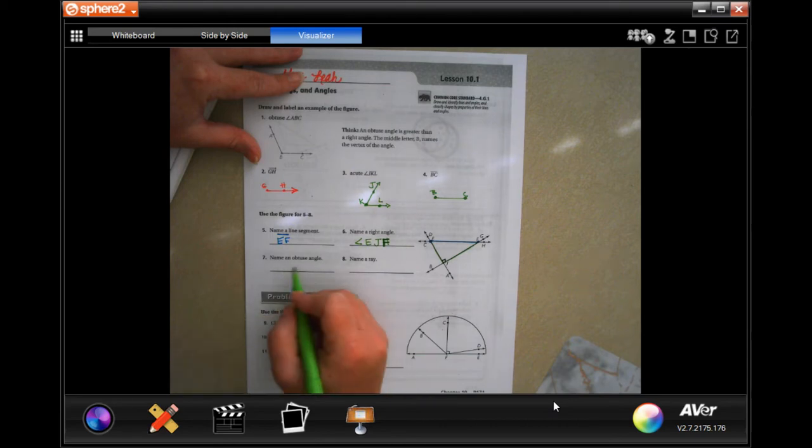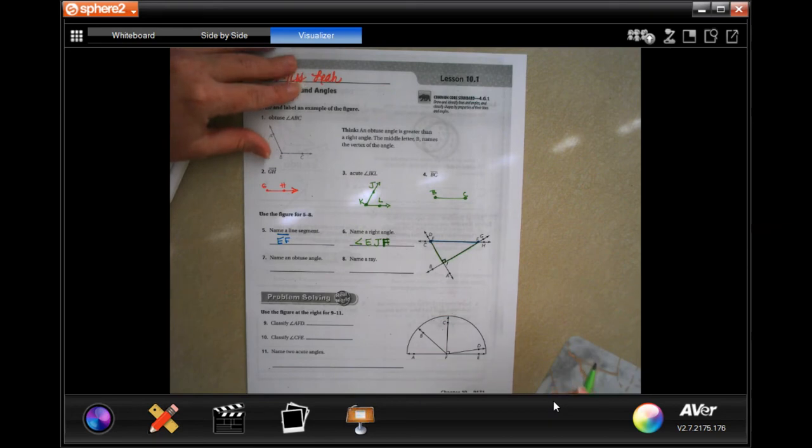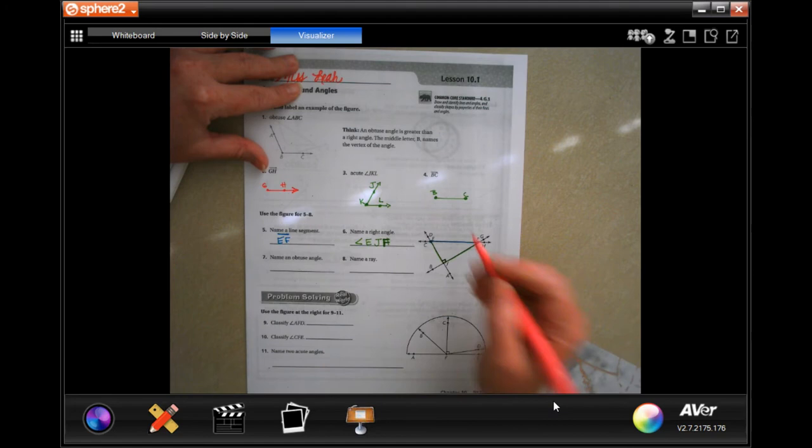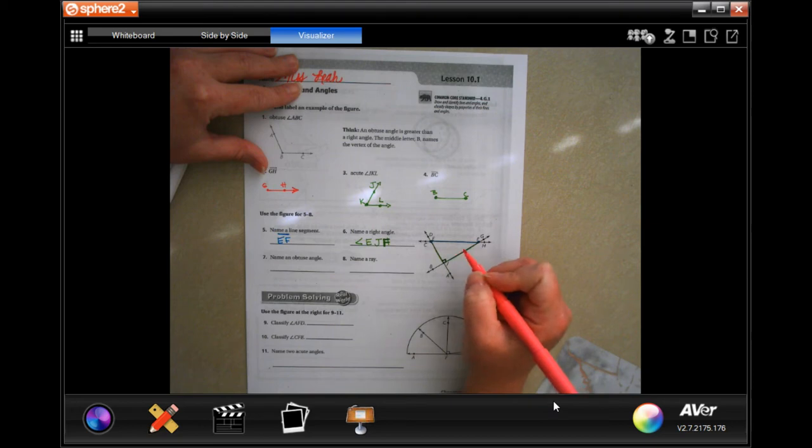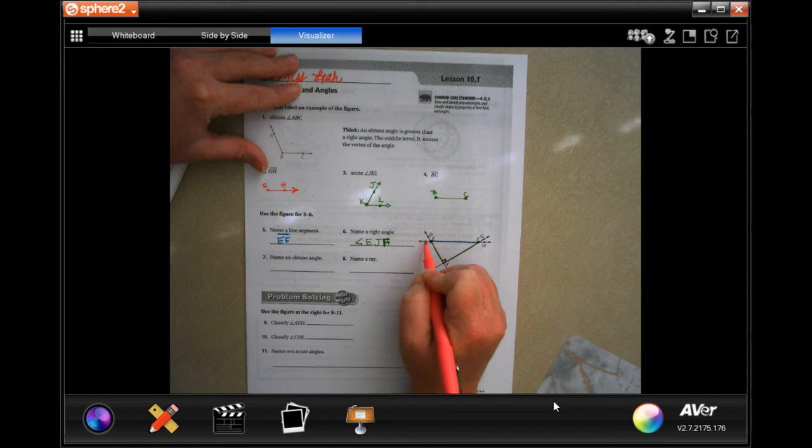Name an obtuse angle, one that is bigger than 90 degrees. They went to another color so we can all see them. They went C, E, J.